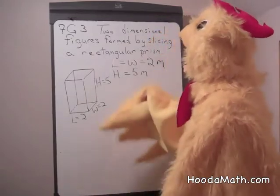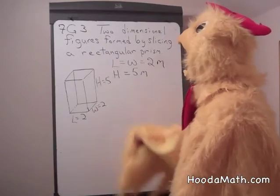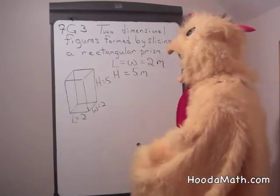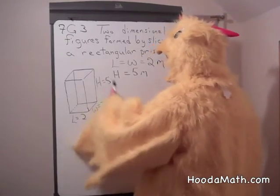we're going to see what two-dimensional figures can be formed by slicing a rectangular prism. Now, a rectangular prism has three dimensions: length, width, and height.